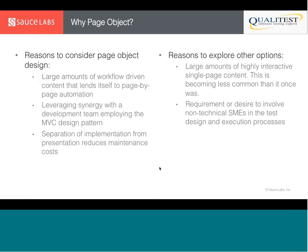Why would you or would you not consider Page Object? No single approach is ideal for everybody. You might consider Page Object if you have a lot of workflow-driven content that lends itself to automating use cases page by page — Page Object is excellent at that because it provides an extremely intuitive model. Additionally, if you're using an MVC design pattern for the application, there's great synergy because things can map one-to-one into a Page Object pattern.